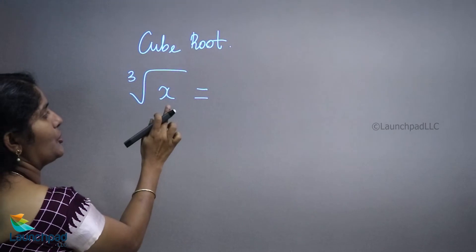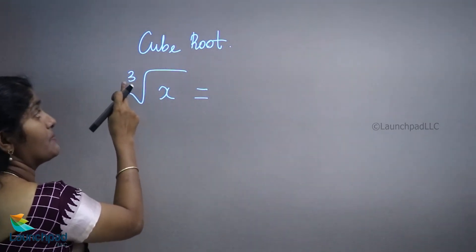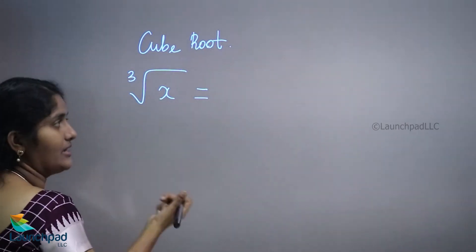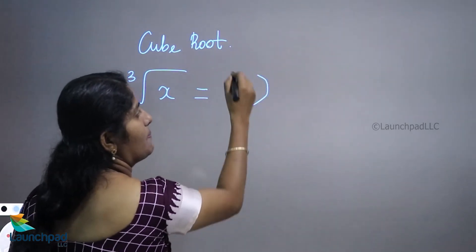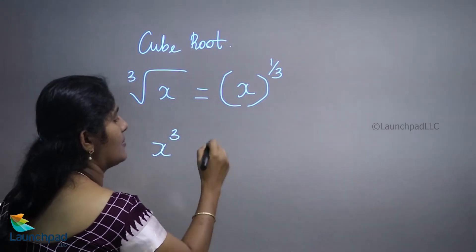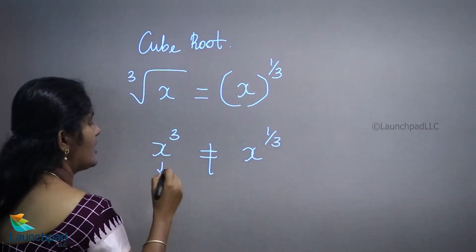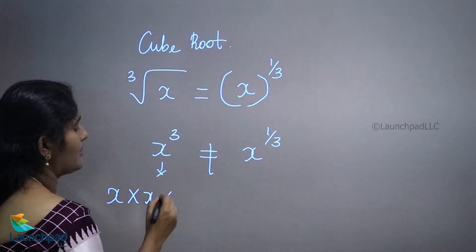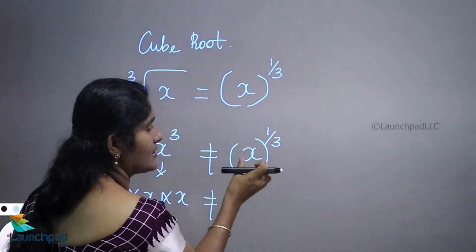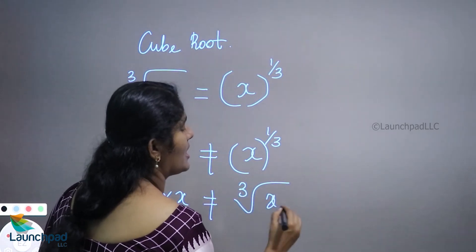This is called the cube root of x. If the power value is 3, this is called the cube root of x. It is also known as x to the power of 1 by 3. x cubed is not the same as x to the power of 1 by 3 — x cubed means x is multiplied 3 times, whereas the cube root means the root of x.